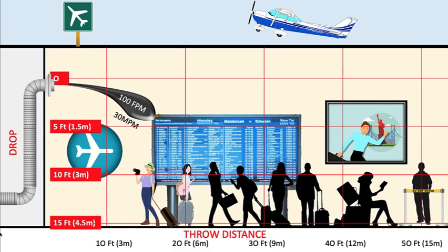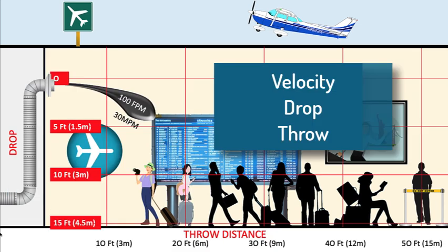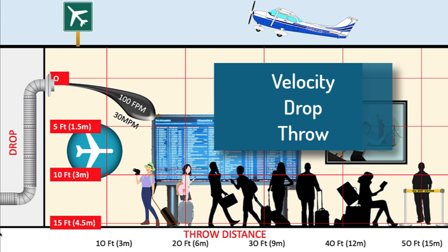In this chart, the relationship between velocity, drop, and throw distance are compared. This scenario will be different per manufacturer, diffuser location, deflection angles, and whether there is a ceiling. This example is intended to get you thinking about the factors that are important to consider.